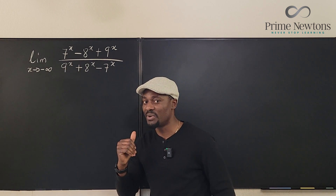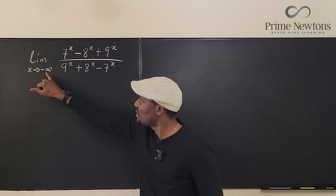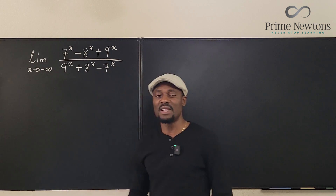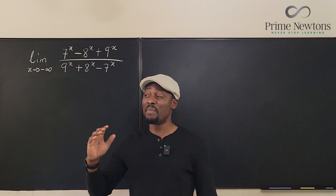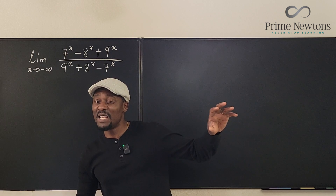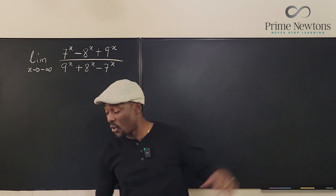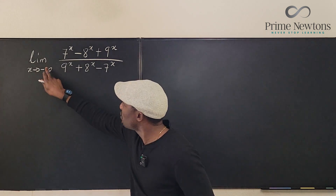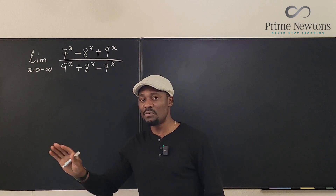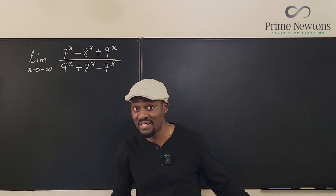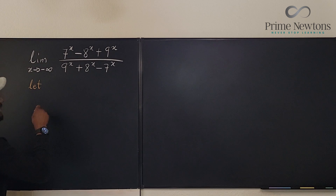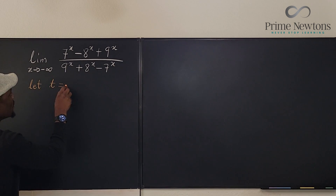Now, whenever you're dealing with negative infinity, if possible switch it to positive infinity — it makes life a lot easier. We tend to have a better picture of what happens as things get bigger, rather than going negatively smaller. So my first move is to replace the variable. We tend to understand infinity better than negative infinity. Let t equal negative x.